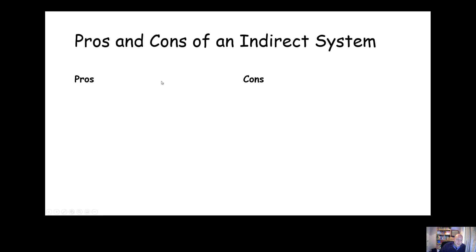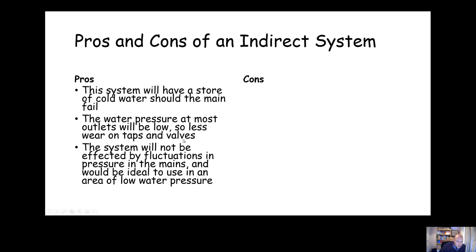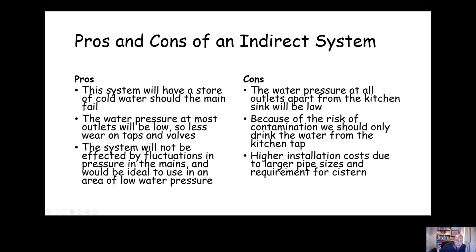The pros and cons of an indirect system are basically the reverse. Pros: there is a store of cold water should the mains fail. Water pressure at most outlets is low, so there's less wear on taps and valves, and the system is unaffected by pressure fluctuations — ideal in areas of low mains pressure. Cons: water pressure at all outlets apart from the kitchen sink will be low. Due to contamination risk, drinking water is only available from the kitchen tap. Higher installation costs due to larger pipe sizes and the space requirement for the cistern in the attic.